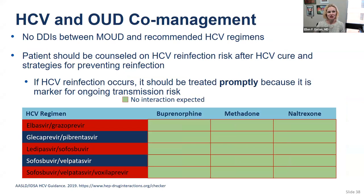Regarding hepatitis C: there are no drug-drug interactions between meds for opioid use disorder and the recommended hepatitis C regimens. This patient should be counseled on hepatitis C reinfection after they are treated and cured — before treatment, counsel them that this may cure them now but they are still vulnerable to reinfection and discuss strategies for preventing future infection. If hepatitis C reinfection occurs, you should properly treat it because it is a marker for ongoing transmission risk. The hepatitis C regimens and the FDA-approved medications for opioid use disorder show no notable drug-drug interactions.